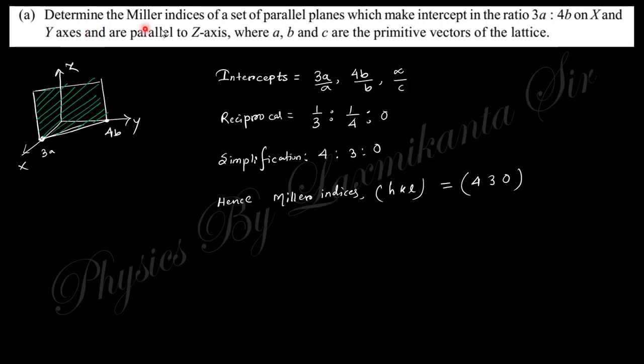Let's start. First question says: determine the Miller indices of a set of parallel planes which make intercept in ratio 3a to 4b on x and y axis and are parallel to z-axis, where a, b, c are primitive vectors of the lattice. So here they intersect at 3a, 4b, and infinity. If you divide it by the unique primitive vector lattice, that is a, b, and c, will be obtained this one. If you simplify, this is 4, 3, 0, so the Miller indices is (4 3 0).